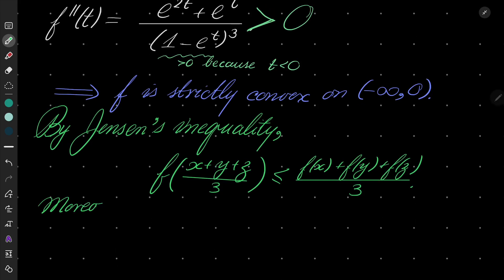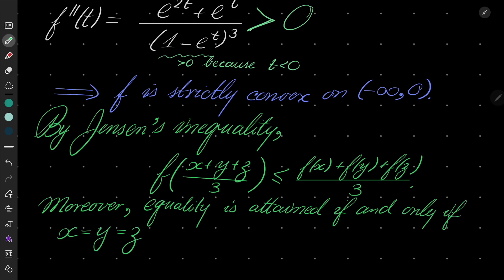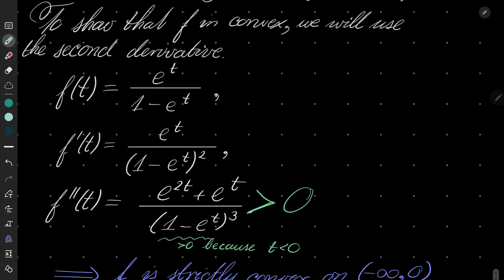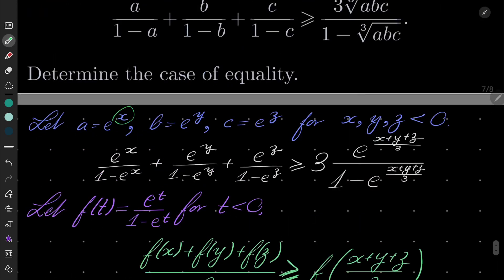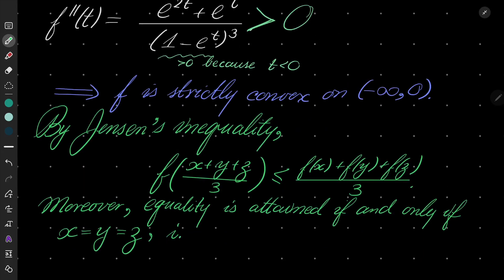Equality is attained if and only if our three numbers are equal. Why is that? Because our function was strictly convex. And x equals y equals z, let's go back, that also means that a, b and c are equal. So i.e., a equals b equals c.